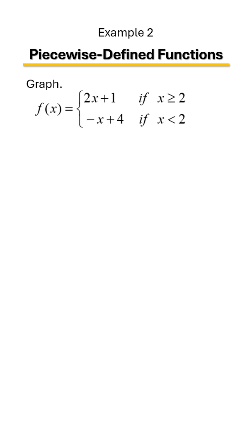So this piecewise defined function has two pieces to it. Let's go ahead and get started with the first piece. You should know that f of x is the same thing as y, so our first line is y equals 2x plus 1.